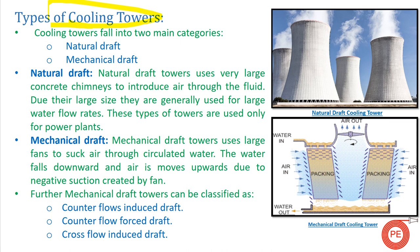There are two broad types of cooling towers: natural draft and mechanical draft. Natural draft cooling towers are very large concrete chimneys through which air is introduced, and a large amount of fluid needs to be cooled. You would have seen these in power plants, nuclear power plants, and other industries where a large amount of water needs to be cooled.